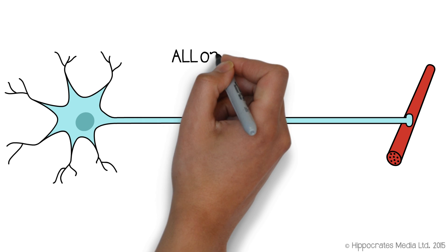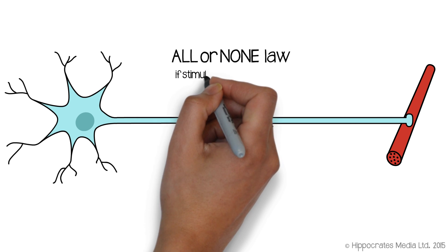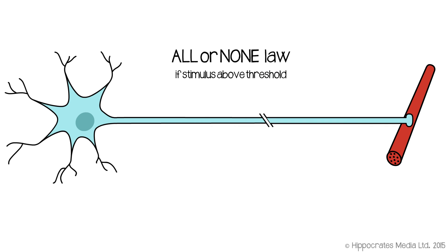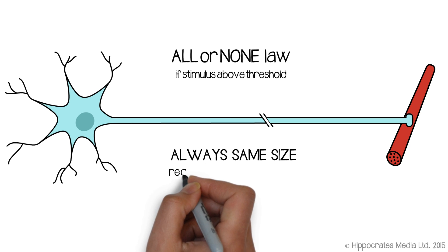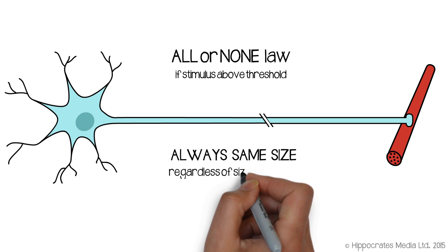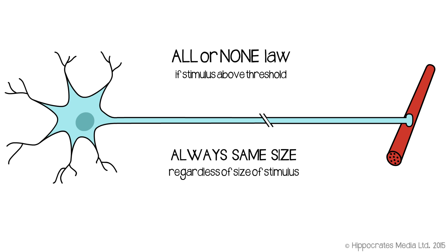One of the properties of action potentials is what's known as their all-or-none nature. That refers to the fact that if you initiate an action potential, it will continue all the way down the axon, it will be the same size each time, and it will always transfer itself all the way to the end. Every action potential you generate subsequently will look exactly the same as the first one. So how do action potentials propagate along an axon?